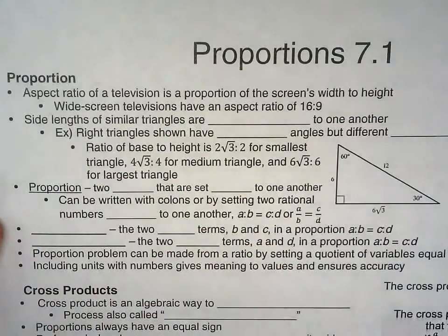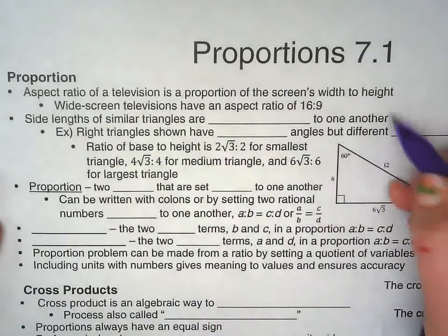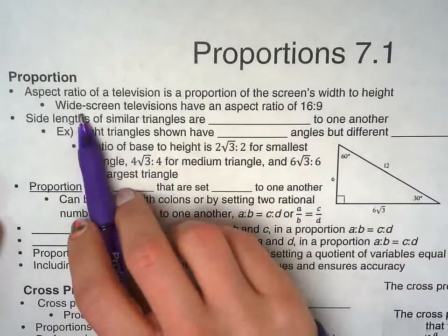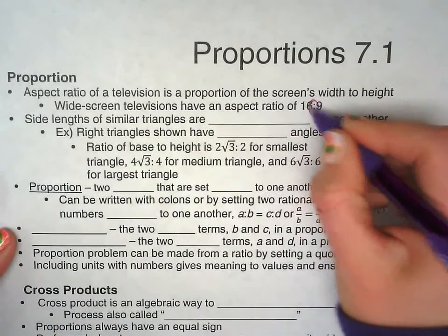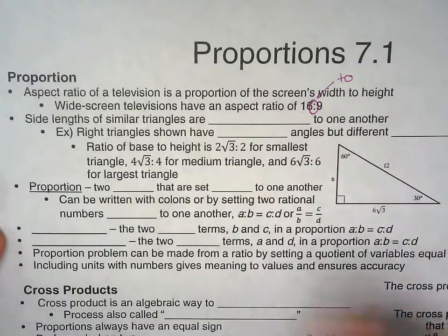So the aspect ratio of a TV is proportional to the screen's width to the height. For example, the ratio is 16 to 9.